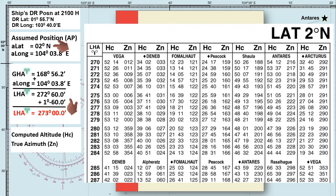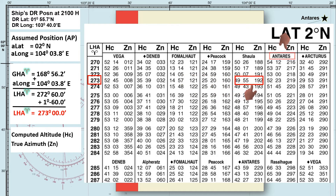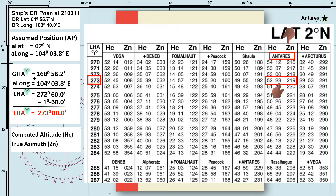Our LHA of Aries is 273 degrees, and the observed celestial body is star Antares. We can find the computed altitude and the true bearing of the star Antares here. The computed altitude is 52 degrees 23 minutes, and the true azimuth is 219 degrees true.